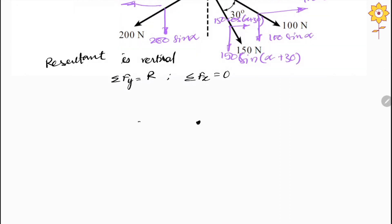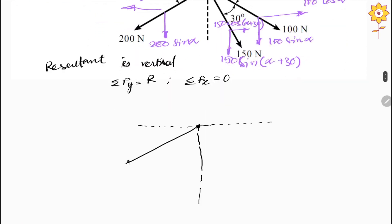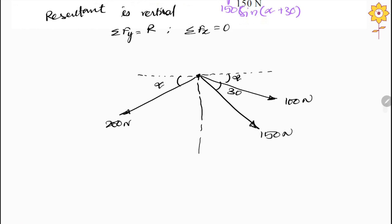We can draw the equivalent simplified force diagram. From this system we have three forces: 200 Newton, 100 Newton, and 150 Newton. The angles are alpha, 30, and alpha respectively. Now for these forces we have to find the resultant, but first we need to find alpha.